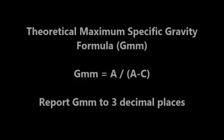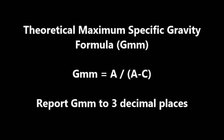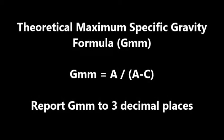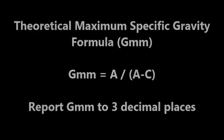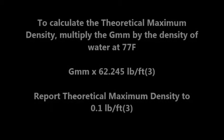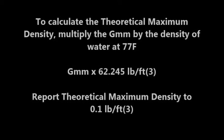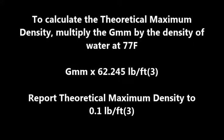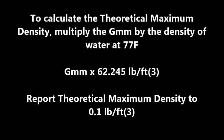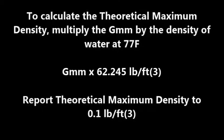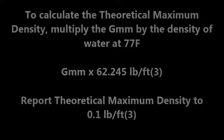Here is the theoretical maximum specific gravity formula, the GMM. Report the GMM to 3 decimal places. To calculate the theoretical maximum density, multiply the GMM by the density of water at 77 degrees, which is 62.245 pounds per cubic feet. Report the theoretical maximum density to the nearest 0.1 pound per cubic foot.